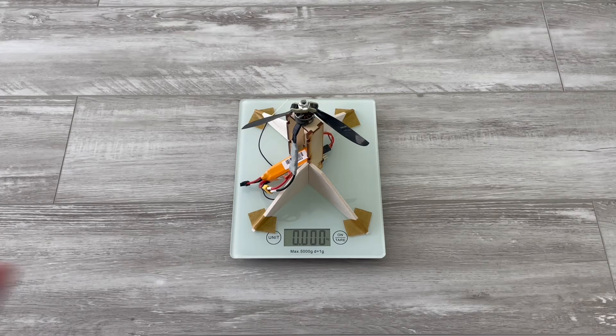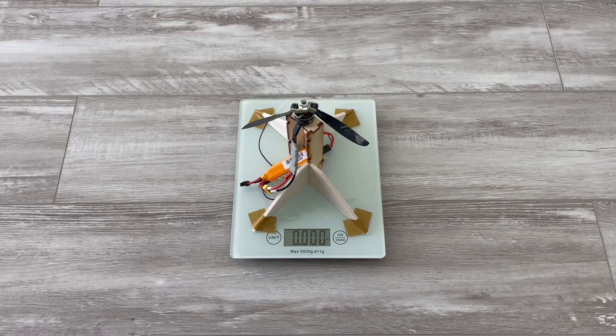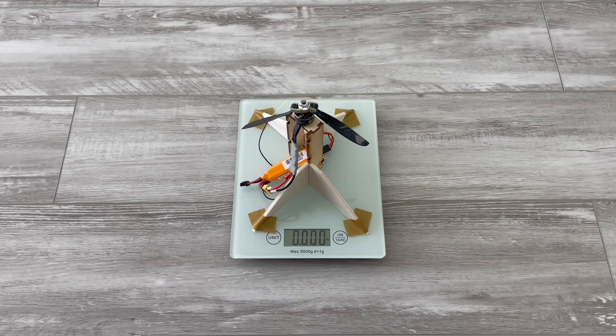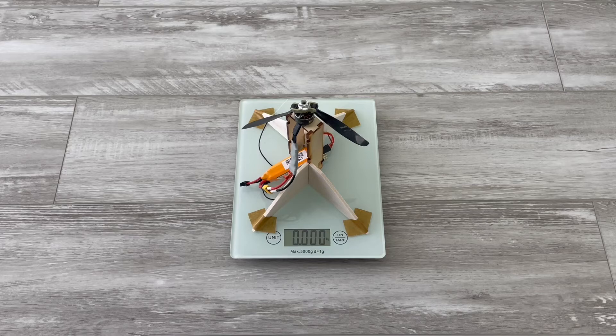As you remember from the previous test with the 6x3 prop on the same KV motor, we had around 420g of peak thrust and the constant one was around 380g.